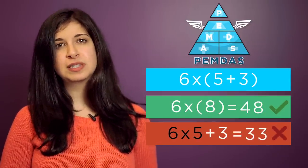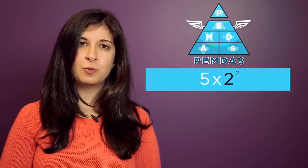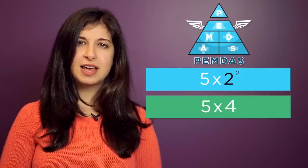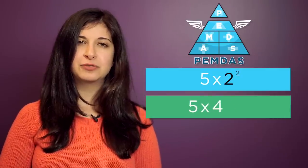After we've done parentheses, we move on to exponents. So in this example, we square the two first, and then multiply it by five to get 20.